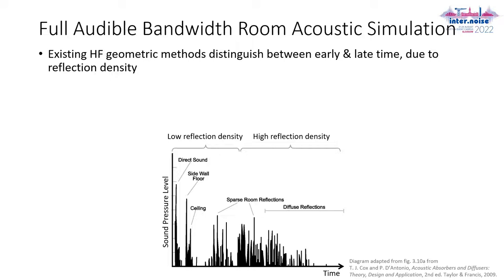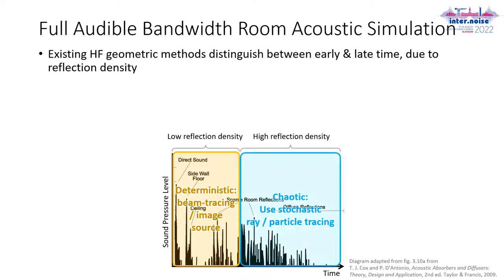Existing high frequency geometrical methods distinguish between early and late time due to reflection density. They typically run a deterministic method such as beam tracing or image source for sparse early reflections. Then later, where things get chaotic, they use something stochastic like ray or particle tracing. A transition process is needed to get energy out of the early time algorithm into the late time chaotic one.